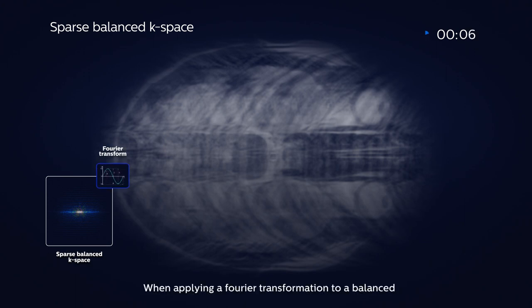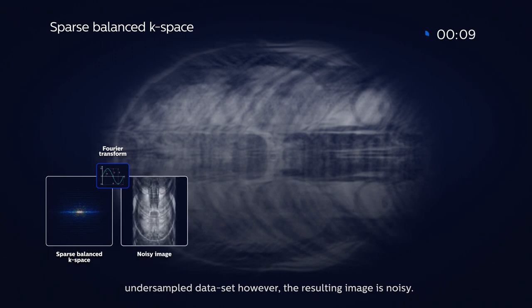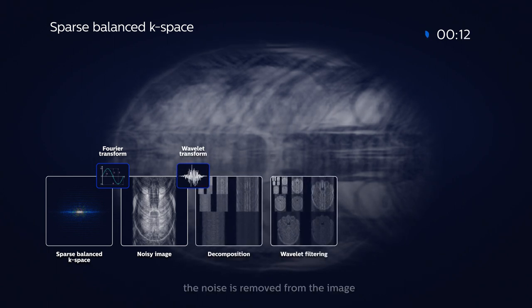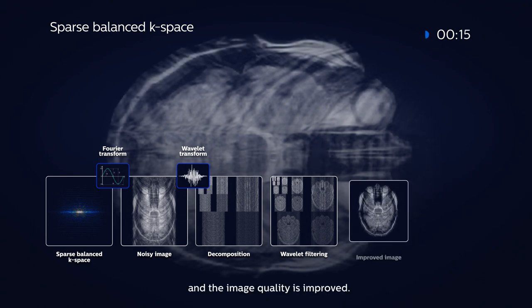When applying a Fourier transformation to a balanced, undersampled data set, however, the resulting image is noisy. By decomposing the image and adding wavelet filtering, the noise is removed from the image, and the image quality is improved.